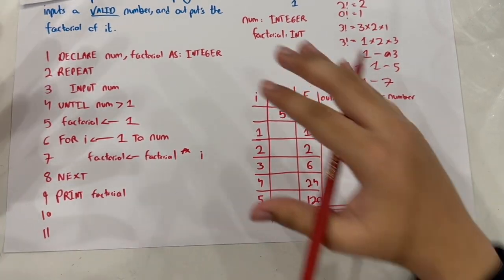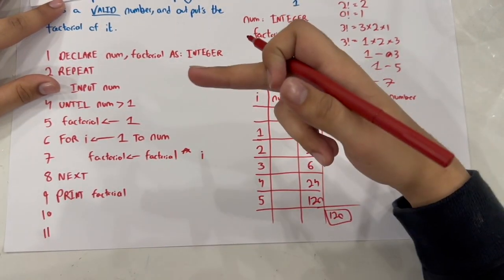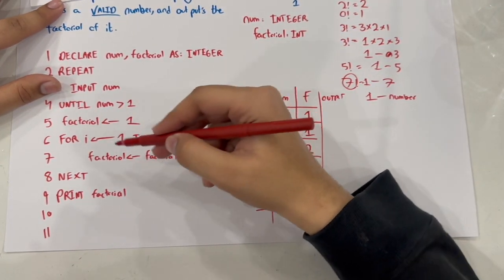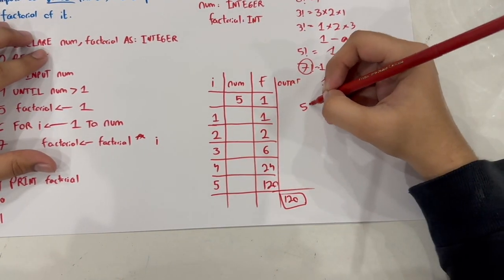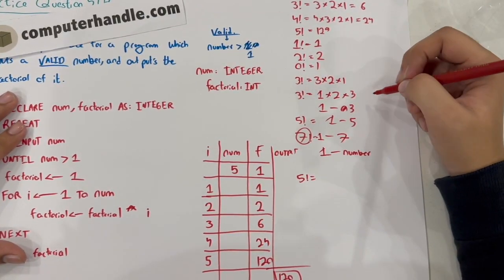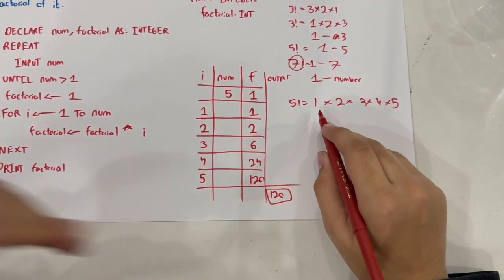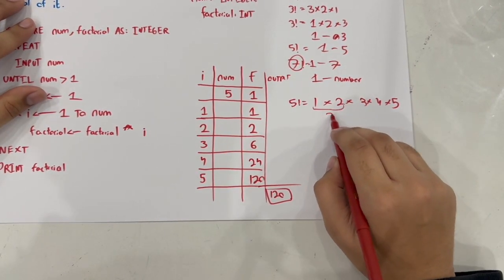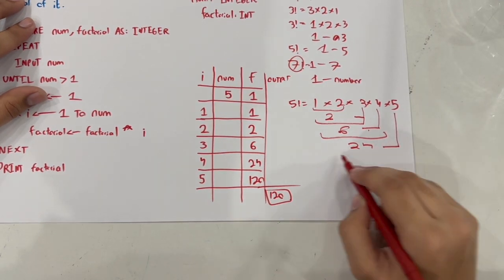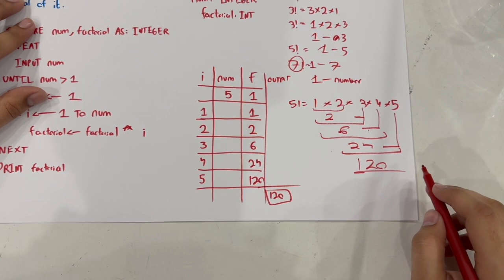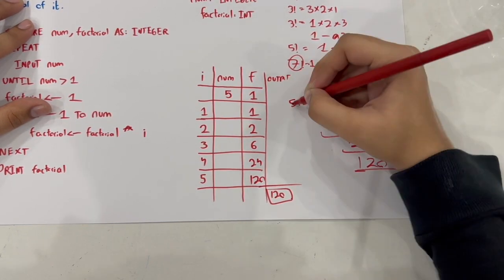This is how we calculate factorial in a program. We assign factorial an initial value of 1, then multiply it by the ith value each time the for loop repeats, until the number you initially entered is reached. So 5 factorial is 1 into 2 into 3 into 4 into 5 = 120. The value of i increases until it reaches the value of num.